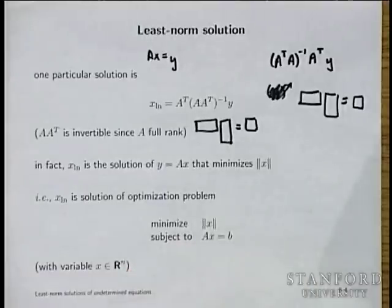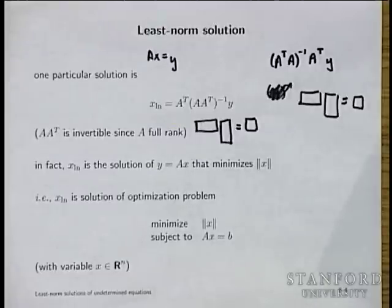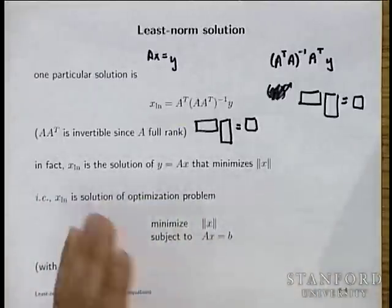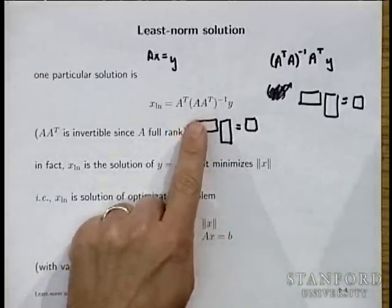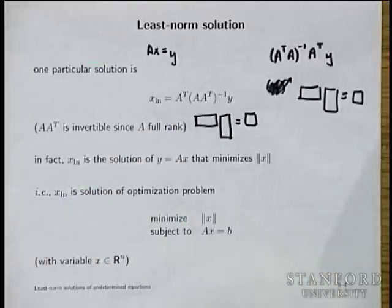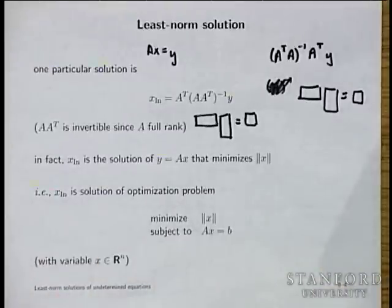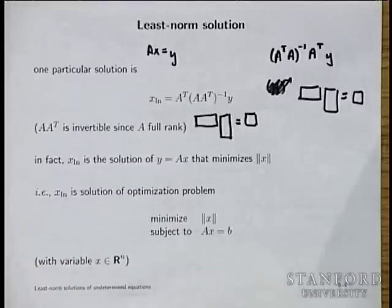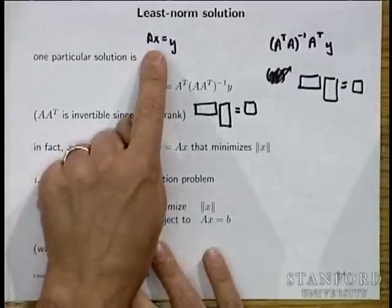It's a solution — but watch out, because although it looks very similar to the least squares approximate solution, the formulas look the same and everything looks similar. You have to be very careful to sort out which is which. x_ln is actually a solution of Ax equals y. Whereas x_ls, which is (A transpose A) inverse times A transpose y, is only for a skinny full rank matrix A, and is generally not a solution of Ax equals y — it's the x that minimizes the residual.